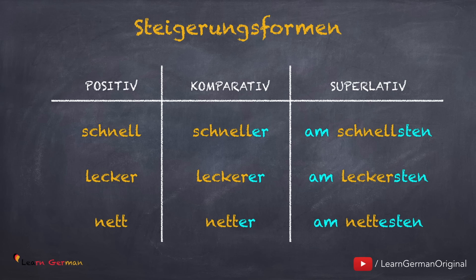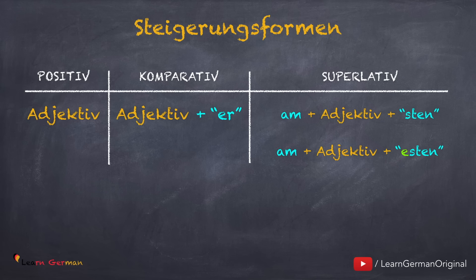Now, if you look at the Komparativforms, you will see a pattern — and a different pattern when you look at the Superlativforms. Let's summarize these patterns. The Komparativform just takes an ending -er at the end of the adjective. Whereas for the Superlativform, you use 'am' plus adjective plus ending -sten or -esten.